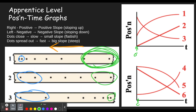This dot diagram starts out moving very fast. Left means negative, so it's sloping down — that would be graphs three, five, and six. This dot diagram is moving fast at the beginning, and graph three is moving quite fast at the beginning, going in a negative direction, which is left. It ends up going very slow, and graph three ends up going very slow. So this one is number three.